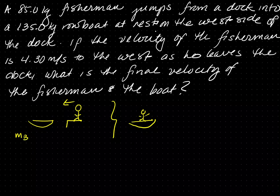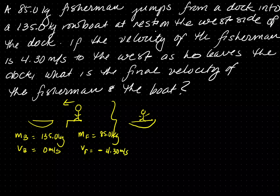The mass of the boat is 135 kilograms, and it is at rest so the velocity of the boat is equal to zero. The mass of the fisherman is 85 kilograms. The velocity of the fisherman is negative because it's going towards the west. You could make it positive, but you need to account for direction on the opposite side. You tend to make fewer errors if you make going right or east positive and going west negative.